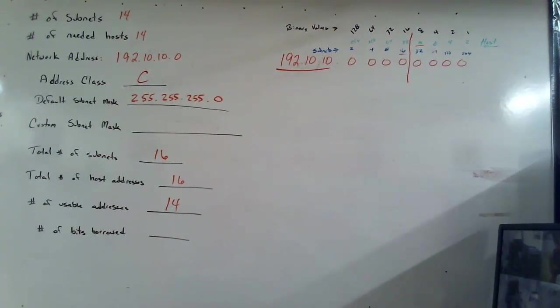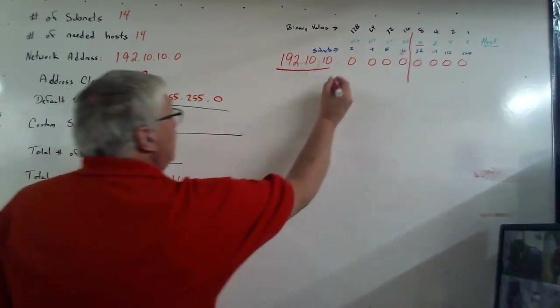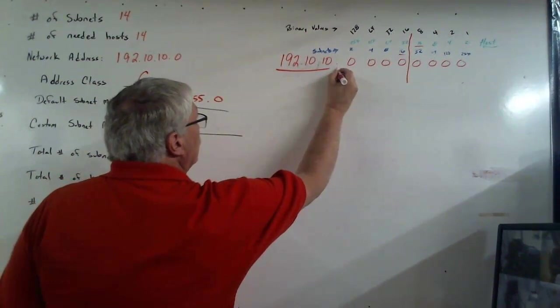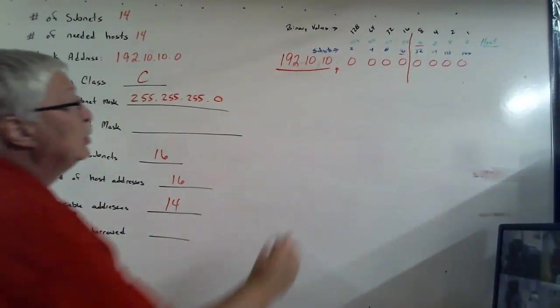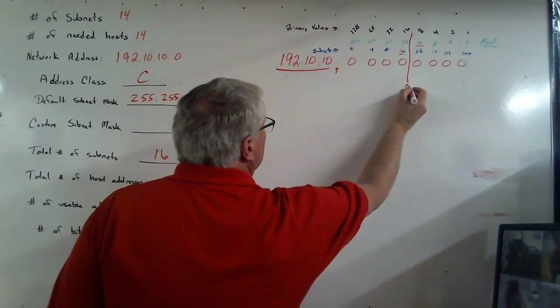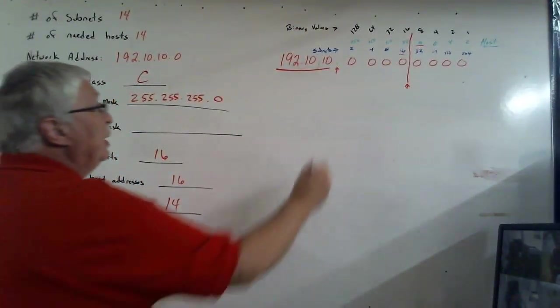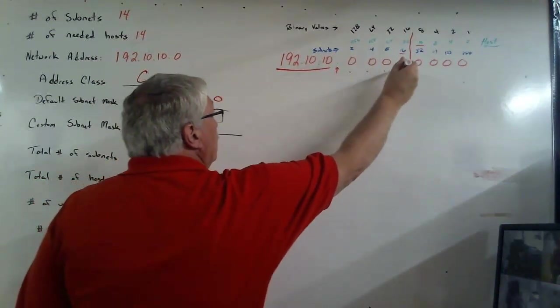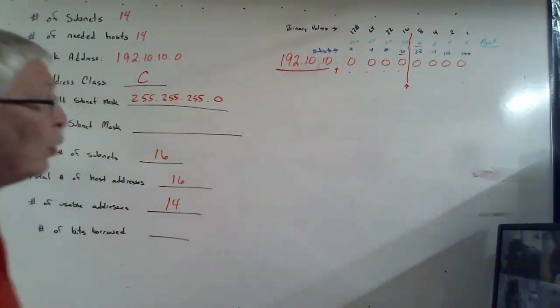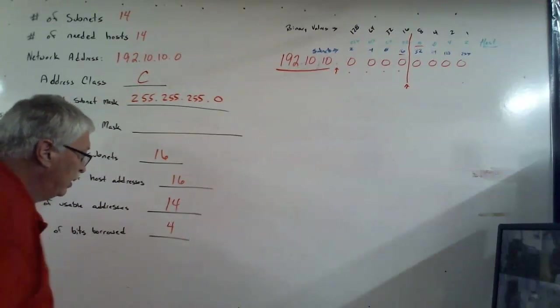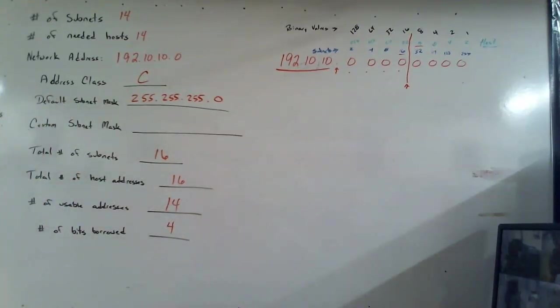The next question is, how many bits did we borrow? Well, that means how many from the original line, or that third dot, to where our new line is, or our new dot will go. And there happens to be one, two, three, four characters, or four bits. So we're going to put a four down here for the number of bits borrowed.